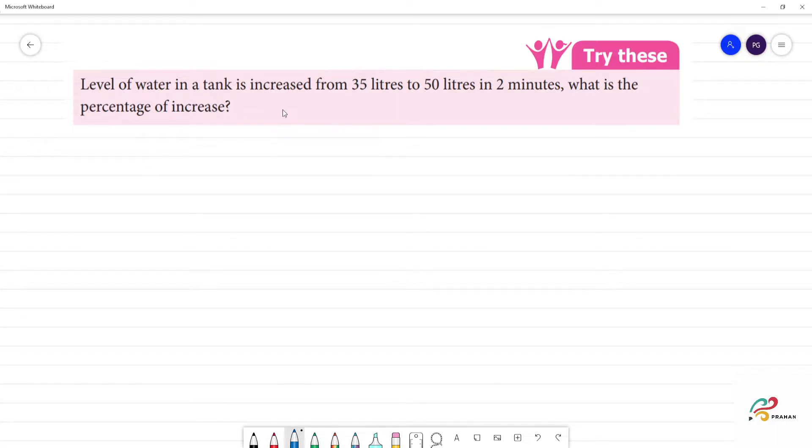Level of water in a tank increased from 35 liters to 50 liters in two minutes. After two minutes, the level of the water increase is 50 liters. The original water level is equal to 35 liters.